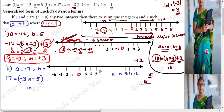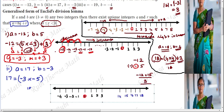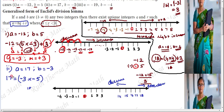Using the number line: towards left is decreasing, towards right is increasing. We need a positive number close to 17. Checking: minus 3 into minus 5 equals plus 15; minus 3 into minus 6 equals plus 18 which exceeds 17. So minus 5 is the correct quotient.